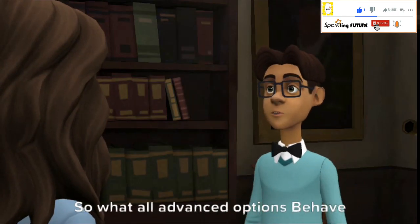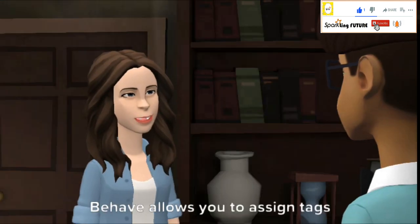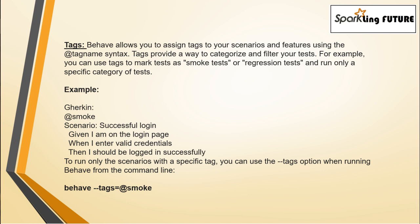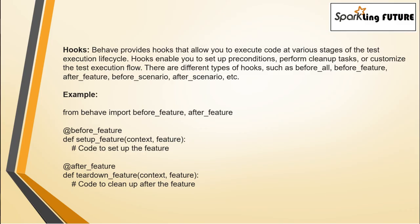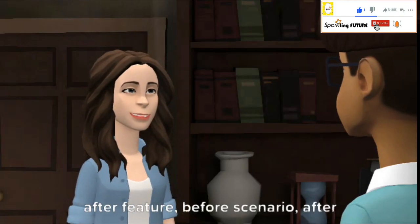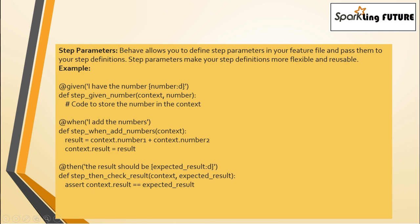That looks easy. So what advanced options does Behave have? Behave allows you to assign tags to your scenarios and features using the @ symbol syntax. Tags provide a way to categorize and filter your tests — for example, you can use tags to mark tests as smoke tests or regression tests and run only a specific category. Behave also provides hooks that allow you to execute code at various stages of the test execution lifecycle. Hooks enable you to set up preconditions, perform cleanup tasks, or customize the test execution flow. There are different types of hooks such as before_all, before_feature, after_feature, before_scenario, after_scenario, and others. Behave also allows you to define step parameters in your feature file and pass them to your step definitions, making step definitions more flexible and reusable.